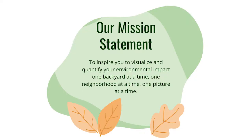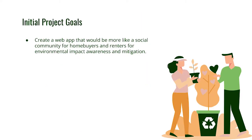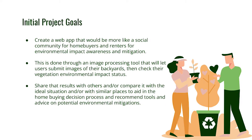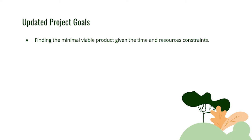Our mission statement is to inspire you to visualize and quantify your environmental impact — one backyard at a time, one neighborhood at a time, one picture at a time. Our initial project goals were to create a web app that would be a social community for homebuyers and renters for environmental impact awareness and mitigation, through an image processing tool that lets users submit an image of their backyards, check their vegetation environmental impact status, share results with others, and compare with similar homes. After reviewing our time and resource constraints, we used the Minimal Viable Product strategy to determine features for this internship.